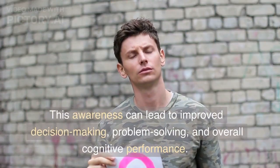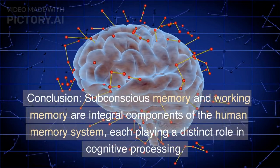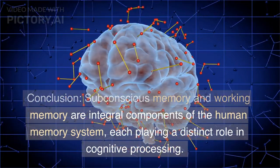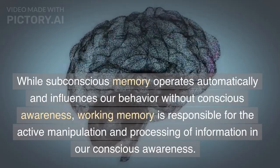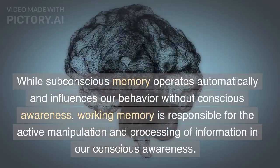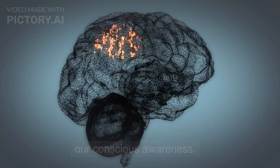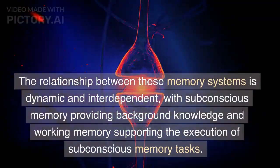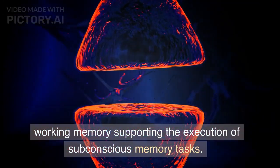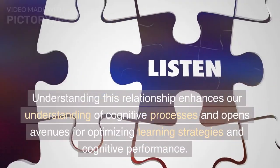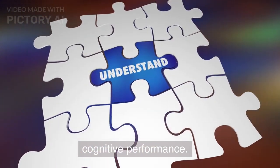This awareness can lead to improved decision-making, problem solving, and overall cognitive performance. Subconscious memory and working memory are integral components of the human memory system, each playing a distinct role in cognitive processing. While subconscious memory operates automatically and influences our behavior without conscious awareness, working memory is responsible for the active manipulation and processing of information in our conscious awareness. The relationship between these memory systems is dynamic and interdependent, with subconscious memory providing background knowledge and working memory supporting the execution of subconscious memory tasks. Understanding this relationship enhances our understanding of cognitive processes and opens avenues for optimizing learning strategies and cognitive performance.